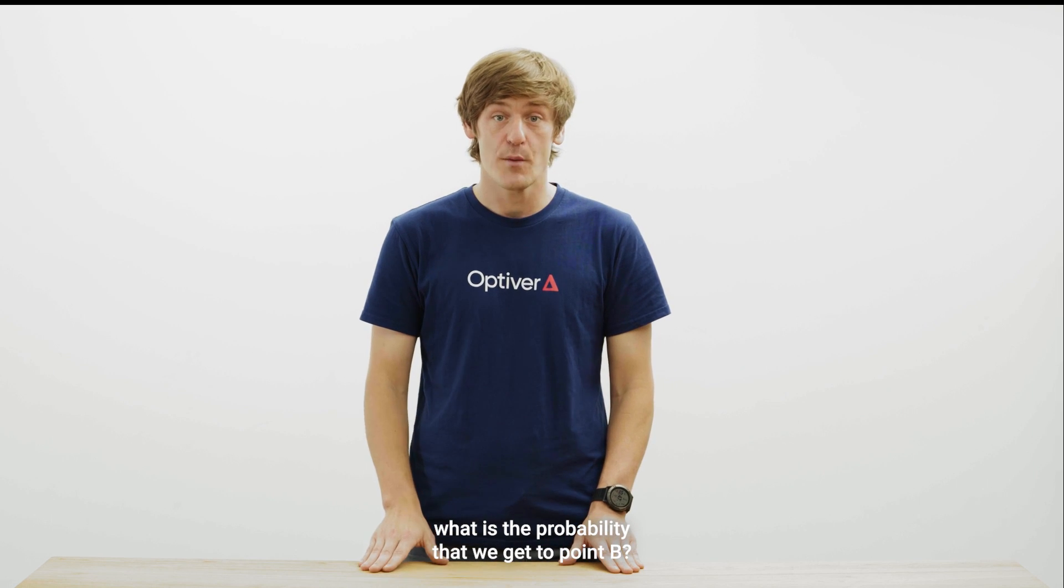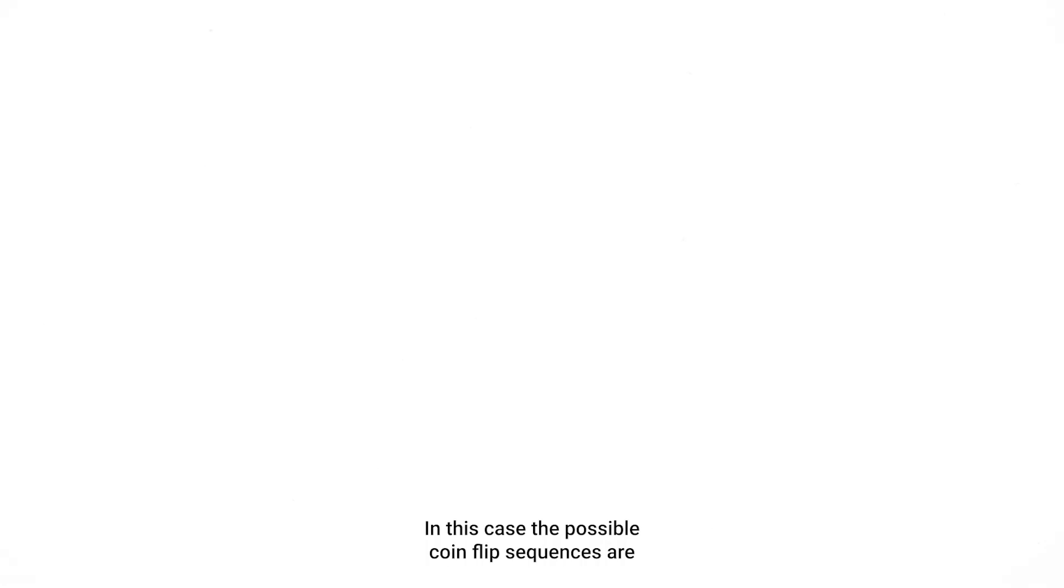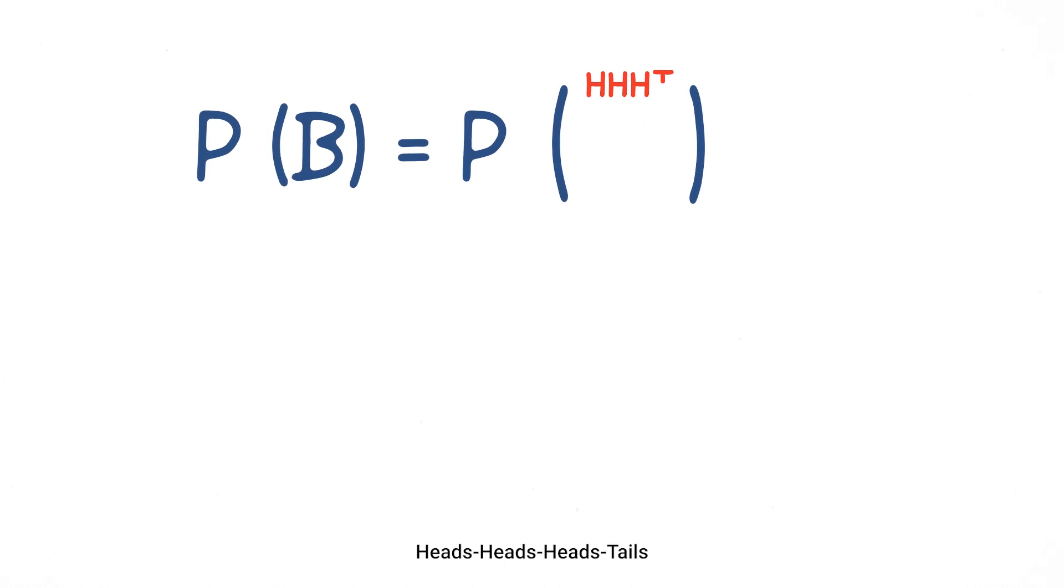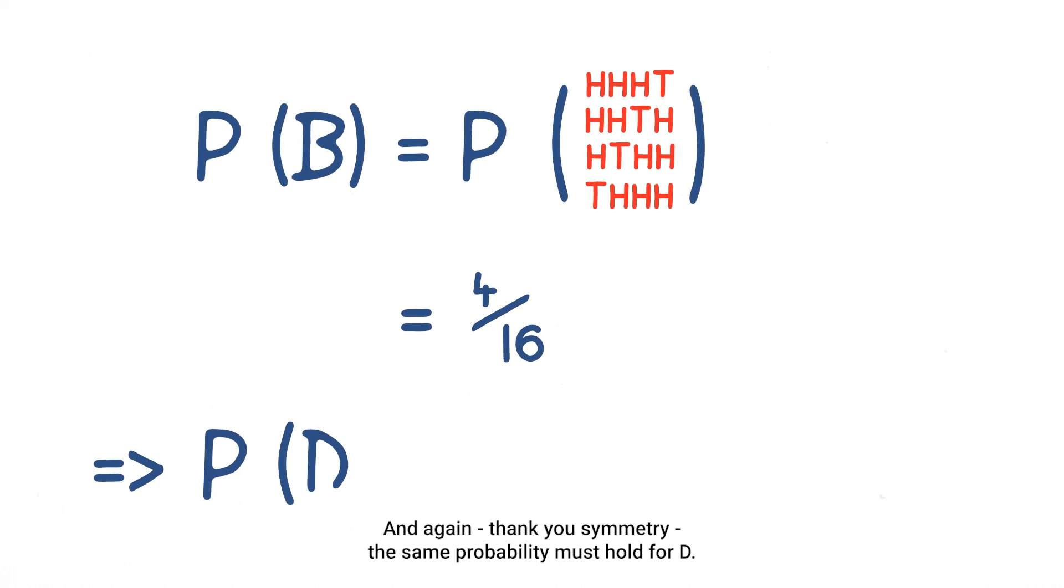So moving on, what is the probability that we get to point B? In this case, the possible coin flip sequences are heads, heads, heads, tails; heads, heads, tails, heads; heads, tails, heads, heads; and tails, heads, heads, heads. You just need three steps up and one step right, in any order. There are four of these, each with a one-on-sixteenth chance of happening. Therefore, there is a four-sixteenths probability that you get to B. And again, thank you symmetry, the same probability must hold for D.